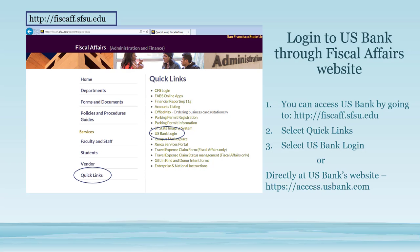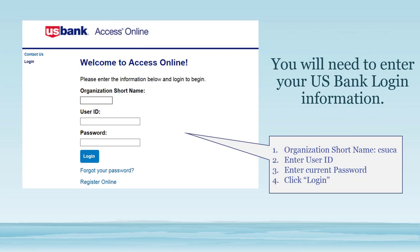To make a dispute you will need to log in to US Bank. You can access US Bank by going to fiscaf.sfsu.edu, then select Quick Links then US Bank Login, or you can go directly to US Bank's website at access.usbank.com.